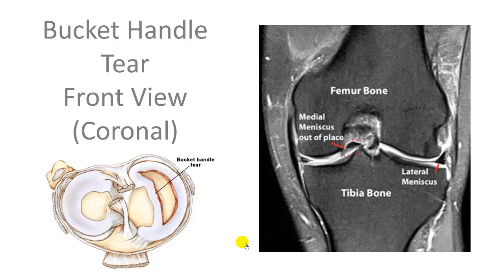A bucket handle tear — the best way to understand it is to look from the top. On the normal side, the meniscus is shaped like a C. On the torn side, you see a rent or tear in the meniscus, and one part has actually moved inward, opening up the tear. When looking at this on a cross section, you're going to see one piece of the meniscus on one side and another piece on the other side — that's a bucket handle tear, meaning one piece of the meniscus has separated from the other.